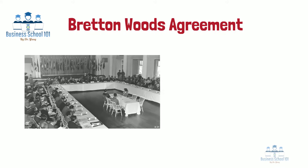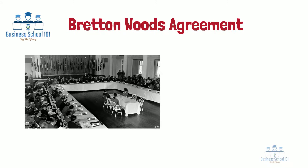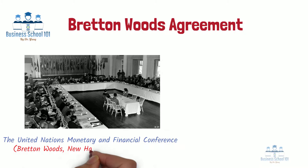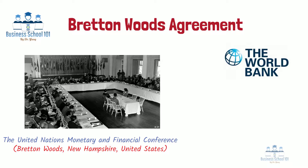The Bretton Woods Agreement was negotiated in July 1944 by delegates from 44 countries at the United Nations Monetary and Financial Conference held in Bretton Woods, an area within the state of New Hampshire, United States. The agreement was the first example of a fully negotiated monetary order intended to govern monetary relations among independent countries, and also created two important global financial institutions: the World Bank and the International Monetary Fund.